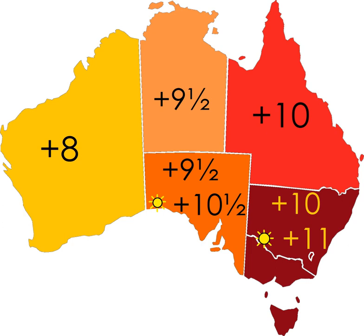The choice of whether to use DST is a matter for the governments of the individual states and territories. However, during World War I and World War II, all states and territories used Daylight Saving Time. In 1968, Tasmania became the first state in peacetime to use DST, followed in 1971 by New South Wales, Victoria, Queensland, South Australia, and the Australian Capital Territory. Western Australia and the Northern Territory did not adopt it. Queensland abandoned DST in 1972. Queensland and Western Australia have occasionally used DST during the past 40 years during trial periods.